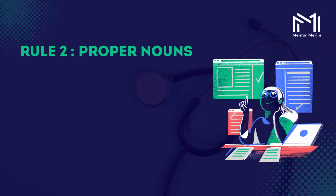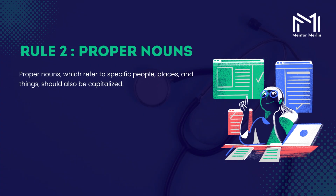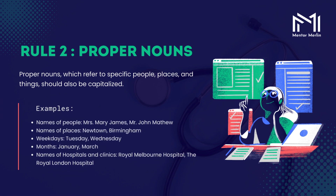Rule 2: Proper Nouns. Proper nouns, which refer to specific people, places, and things, should also be capitalized. Examples include names of people such as Mrs. Mary James and Mr. John Matthew; names of places such as Newtown and Birmingham; weekdays such as Tuesday and Wednesday; months such as January and March; and names of hospitals and clinics such as Royal Melbourne Hospital and the Royal London Hospital.